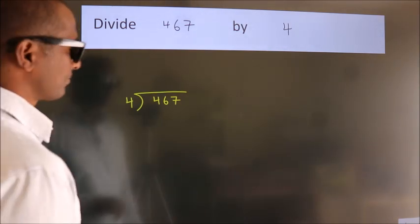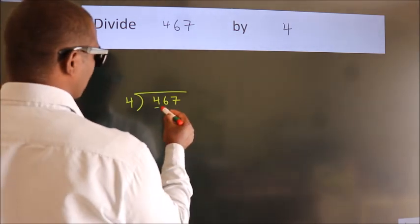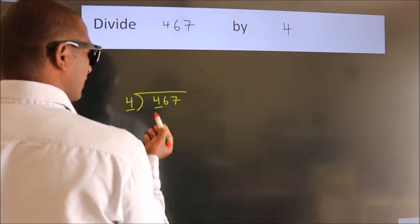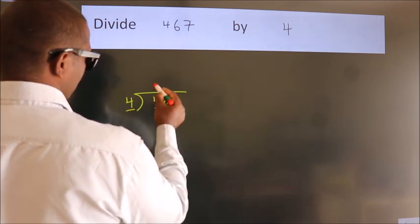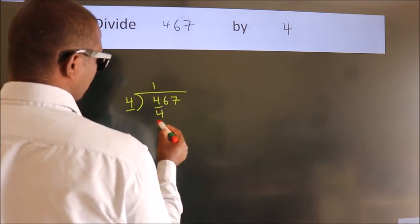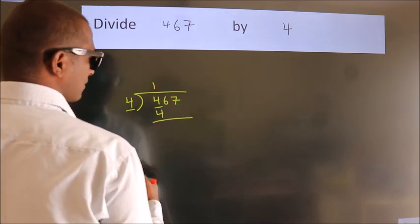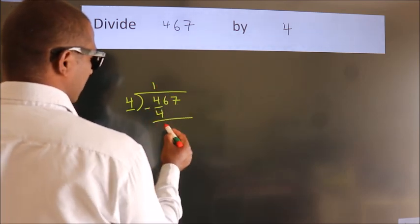Next. Here we have 4. Here 4. When do we get 4? In 4 table. 4 once, 4. Now we should subtract. We get 0.